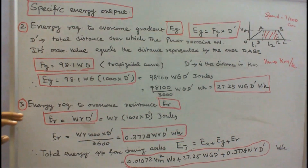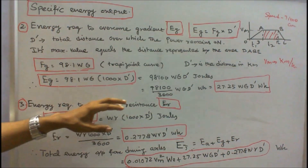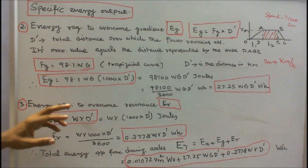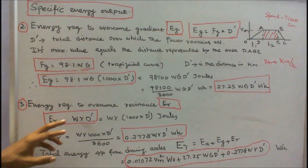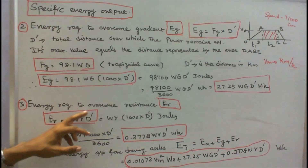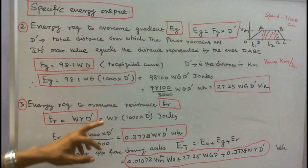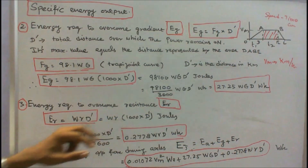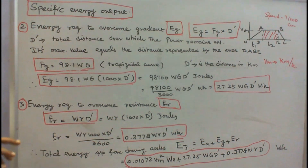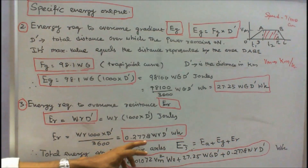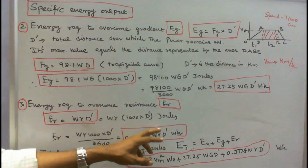The third component is energy required to overcome the train resistance, E_R. E_R equals W into R into D-dash, where W is the dead weight of the train, R is the train resistance, and D-dash is in kilometers. Therefore E_R equals W into R into 1000 into D-dash in Joules. Dividing by 3600 gives E_R equals 0.2778 into W into R into D-dash in watt-hours.